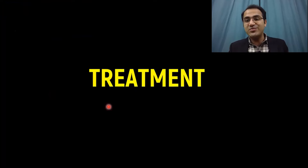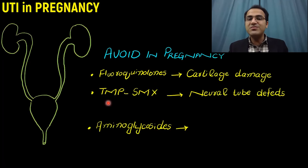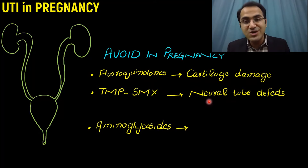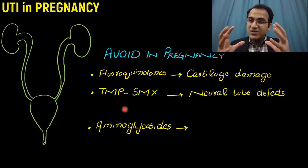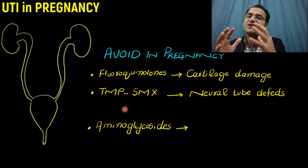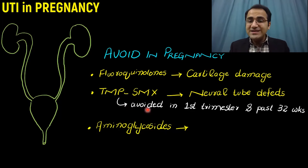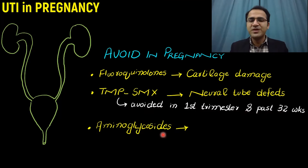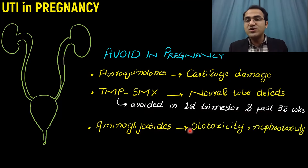For the treatment of UTI in pregnancy, you must remember the drugs to avoid. Avoid fluoroquinolones because they cause cartilage damage. Avoid trimethoprim-sulfamethoxazole because it interferes with folate metabolism, causing neural tube defects — it is specially avoided in the first trimester and past 32 weeks. Aminoglycosides are also avoided because they cause ototoxicity and nephrotoxicity.